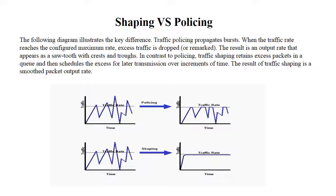Let's say we have a 100 meg Ethernet WAN connection to our ISP, but we've only purchased a 50 meg circuit. The physical connection is 100 meg, but we're only supposed to use 50 of it. We use a QoS shaping policy on the CE and PE routers to throttle down our bandwidth to prevent it from being dropped by the QoS policing in the middle between the CE and PE routers.